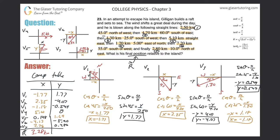Now add up all the y-components: 1.77 minus 4.07 minus 0.549 plus 0 plus 1.69 minus 5.90 plus 0.486. This comes out to negative 6.57 kilometers. So the x and y components of the resultant vector are 3.28 and negative 6.57.